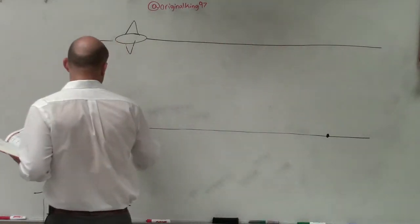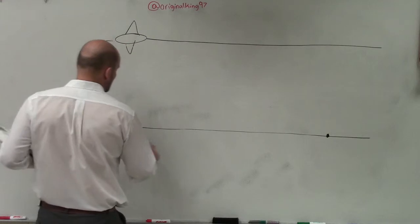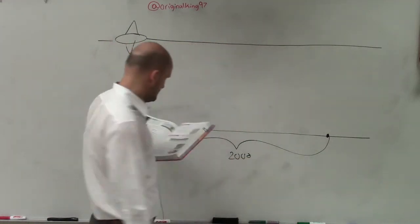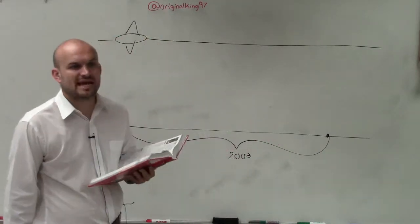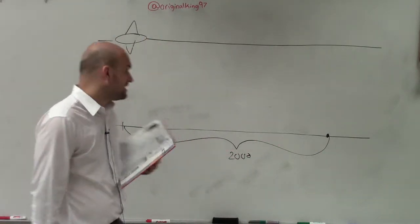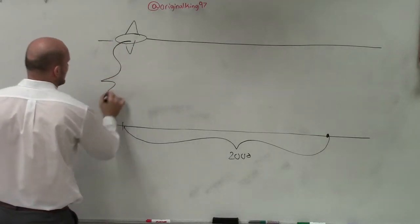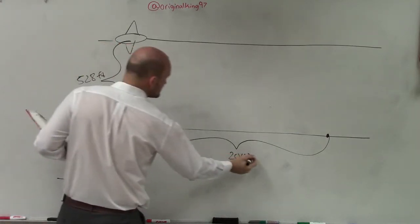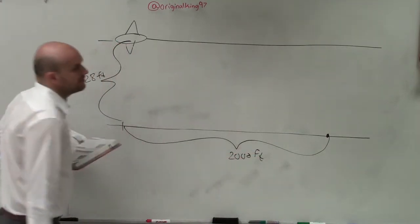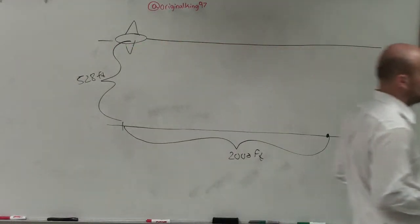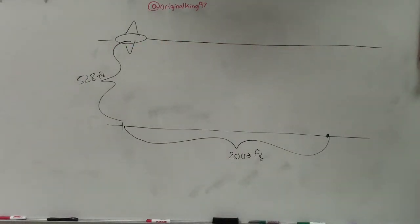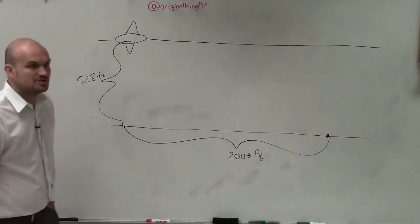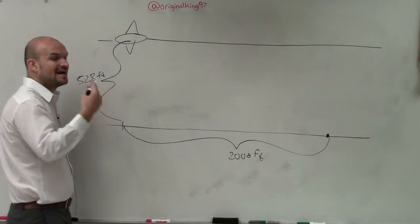The distance from where he is to the airport, they said, is 2,000 feet. So he has 2,000 feet to land. Then they say that he is 528 feet in the air. They're asking us to find the angle of depression — not elevation — the angle of depression, correct?